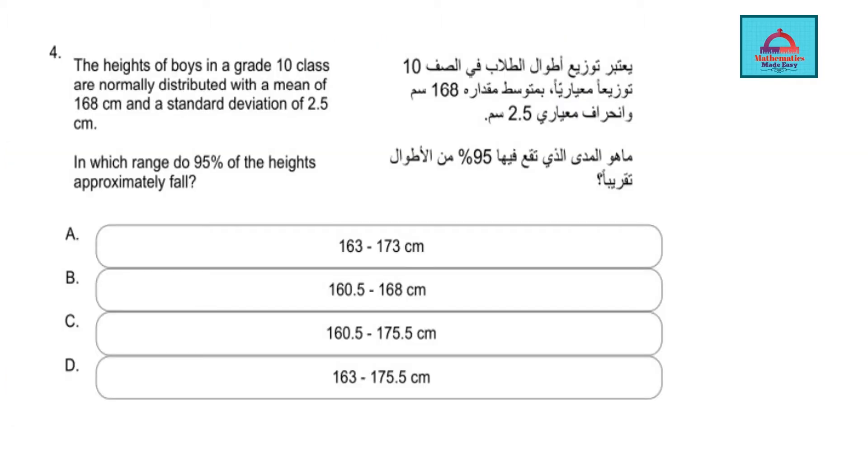So the problem is taken from statistics. I am going to read the problem as usual. We are going to highlight the important information and then decide how we are going to solve it. It is a word problem. The heights of boys in grade 10 class are normally distributed. So this is the key word. Normally distributed. So this is a question on normal distribution. That is the hint for you.